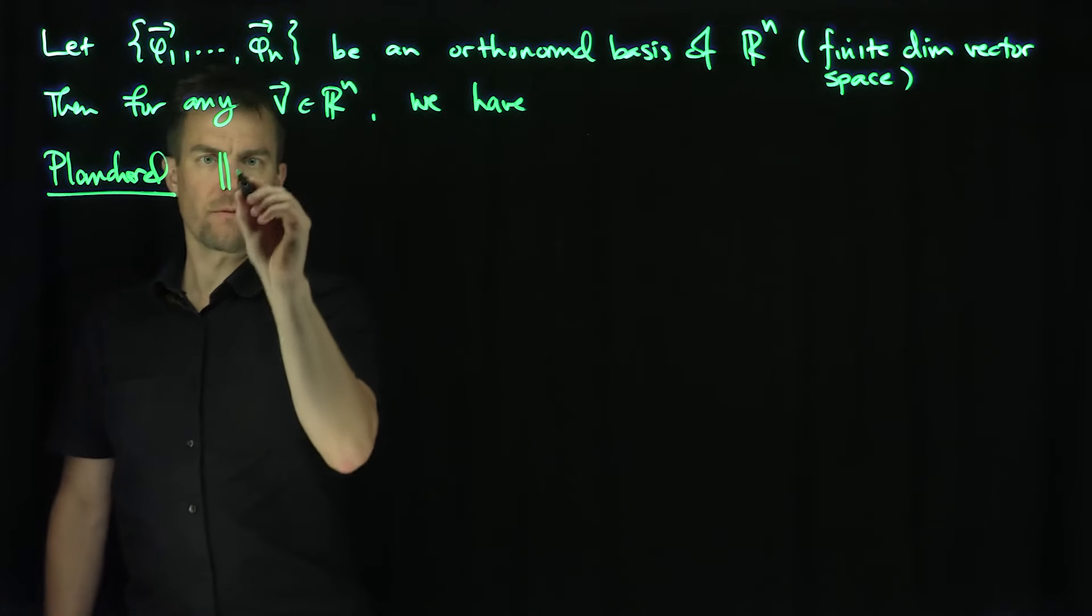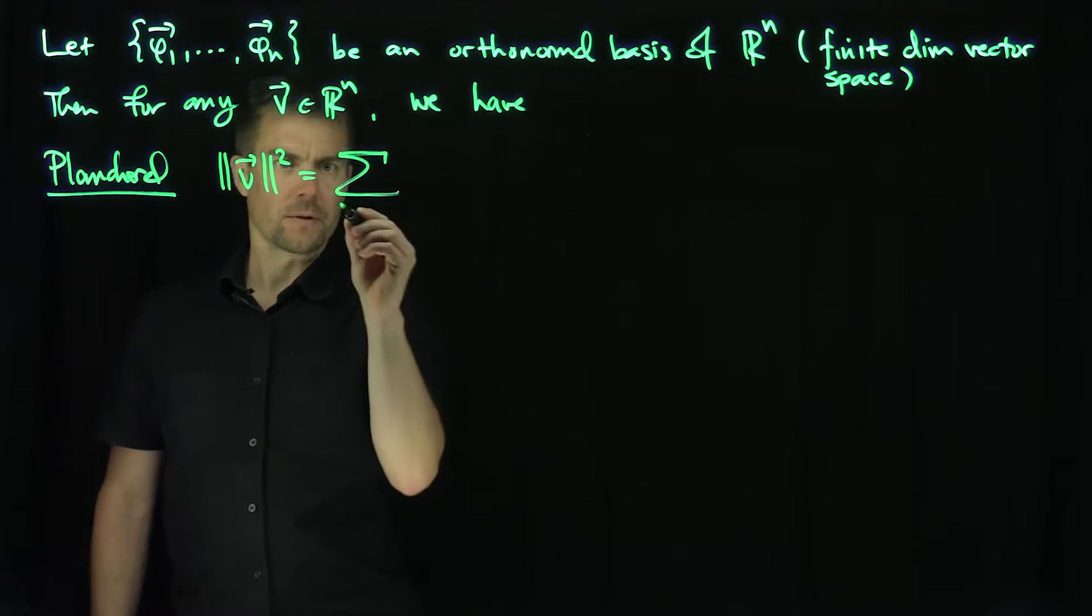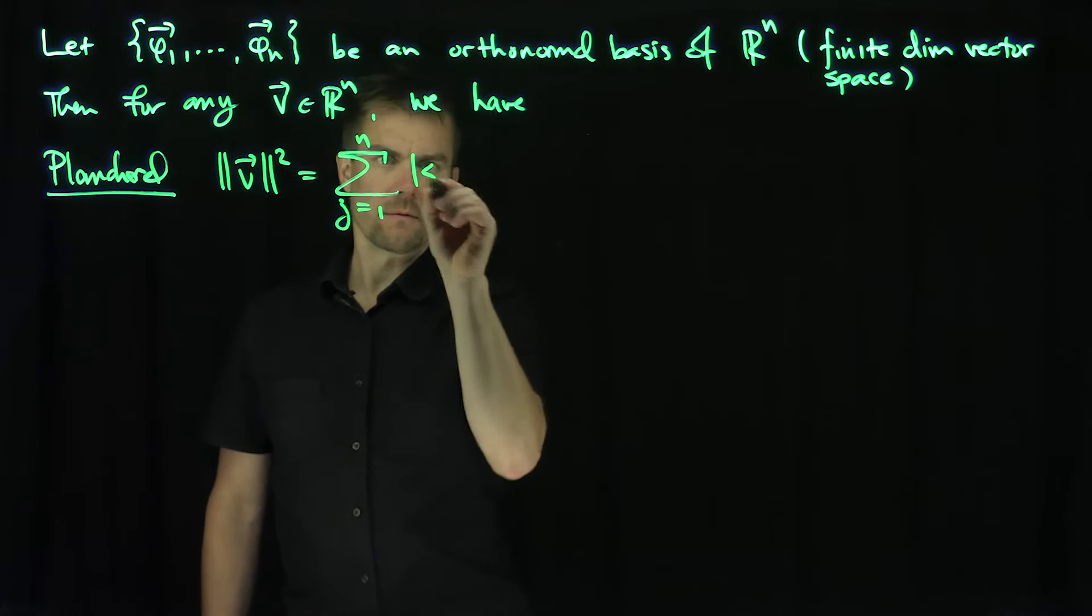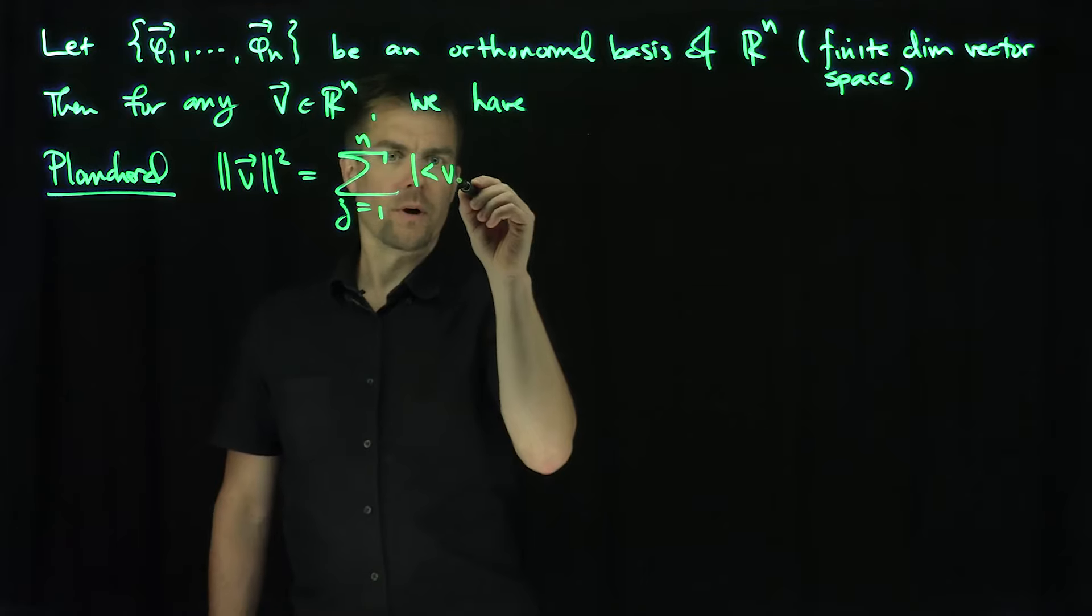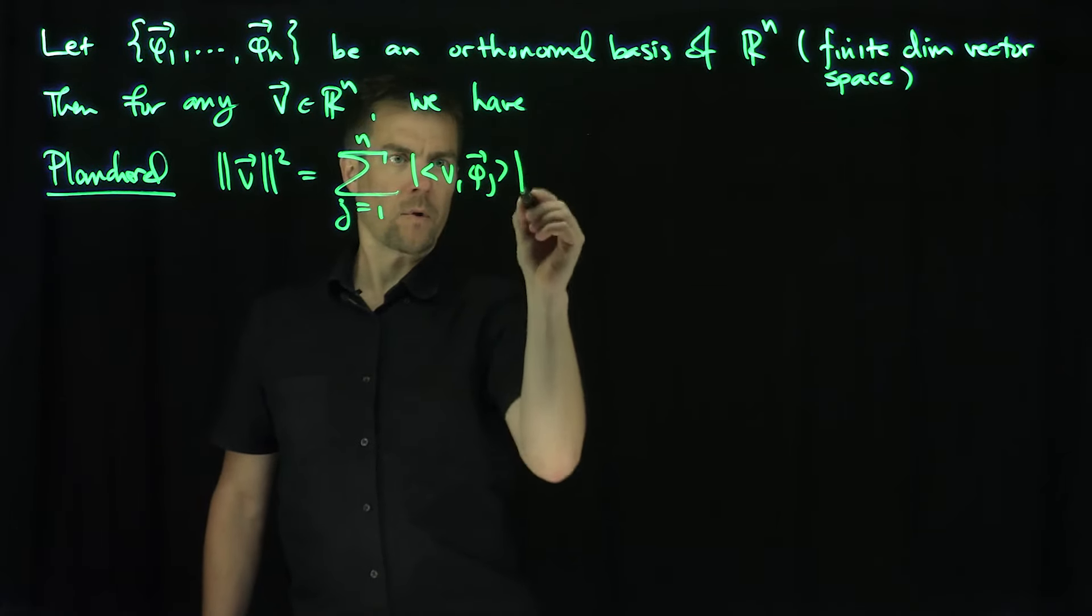Plancherel says that the norm of v squared is the sum from j equals 1 up to n of the inner product of v with phi_j, quantity squared.